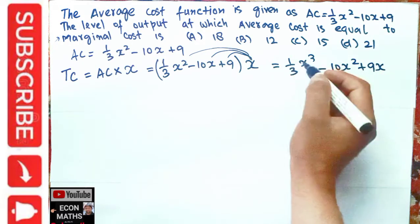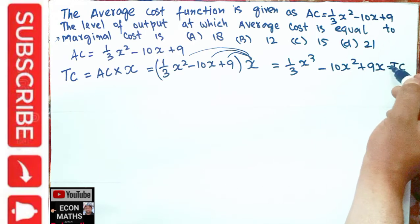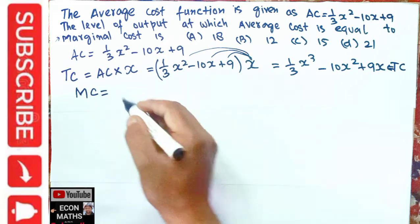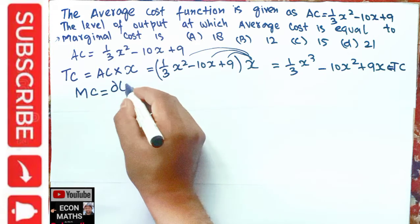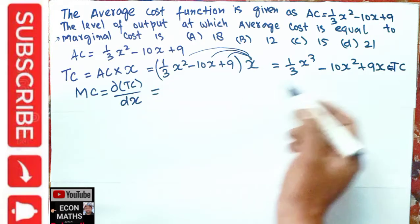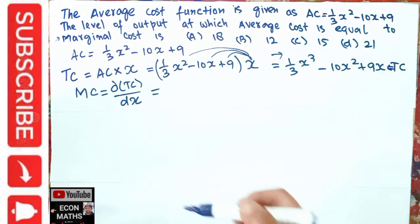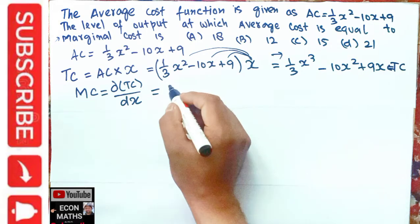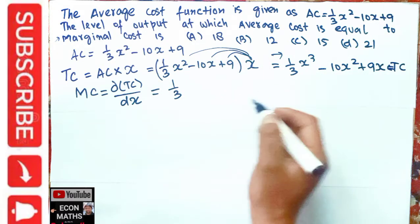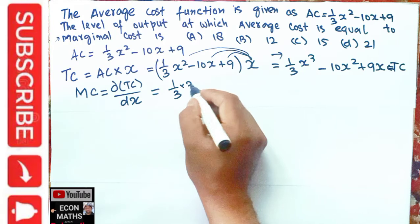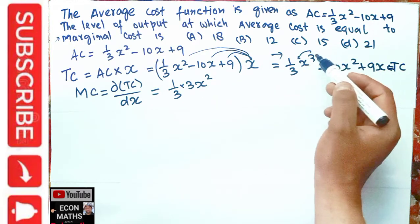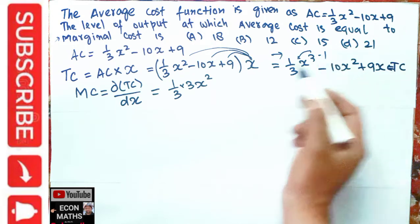This is our total cost. Now we find the marginal cost. Marginal cost is simply the derivative of total cost with respect to x, the quantity. So we differentiate the total cost function. The derivative of (1/3)x³: the exponent 3 becomes the coefficient, giving 3x², and (1/3) × 3 = 1, so we get x².